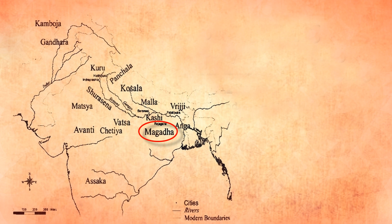Children, in the previous lesson we discussed about the Janapadas and the Mahajanapadas. The Mahajanapadas of Magadha became the centre of India's first empire. As discussed in the first lesson, many invaders and foreign rulers invaded India with a desire to have a unified rule all over the subcontinent.